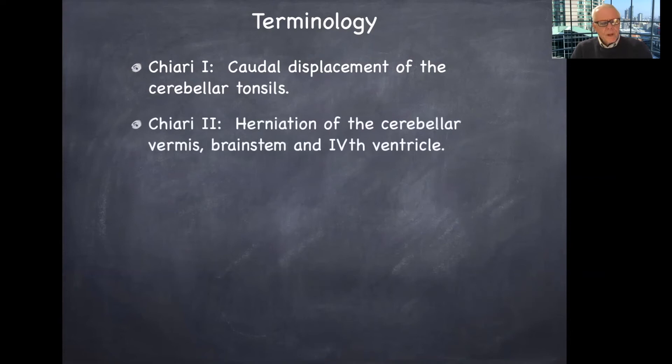There's Chiari 2, which is herniation of the cerebellar vermis, not the tonsils, but the vermis. So that's the central midline cerebellar structure into the foramen magnum or through it. The brainstem and the fourth ventricle all sort of migrate down through.